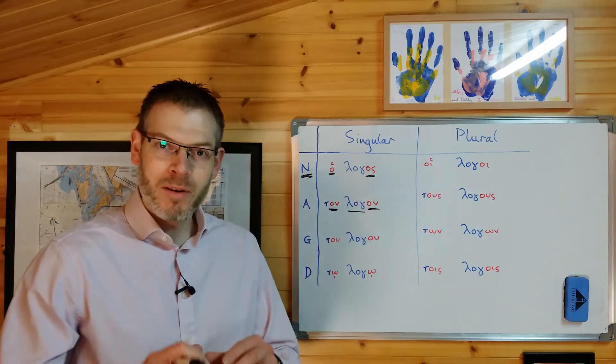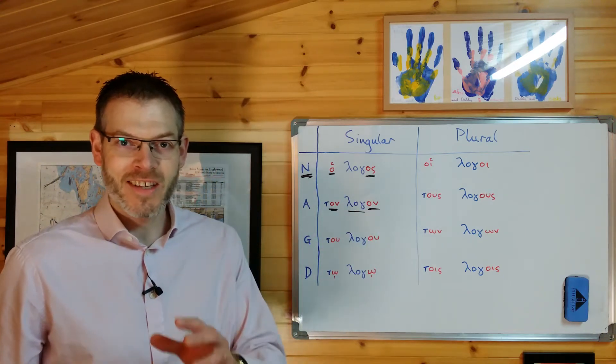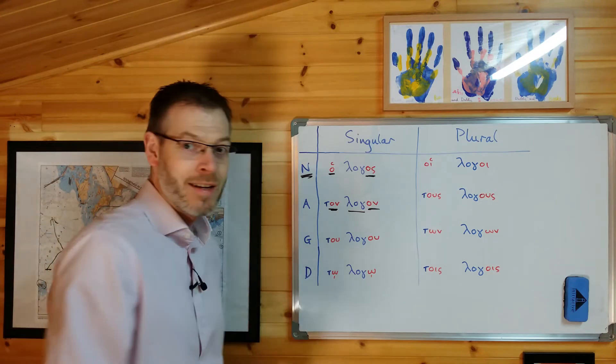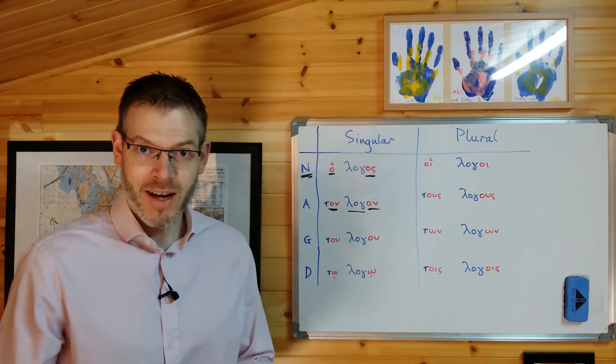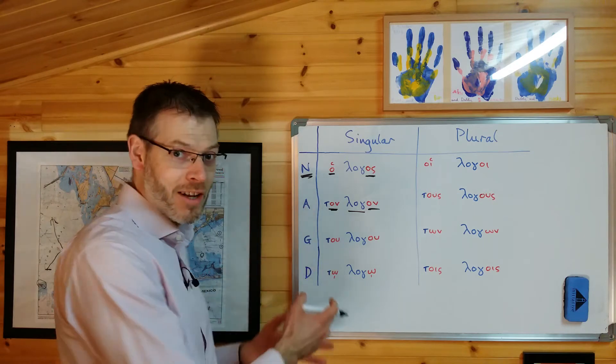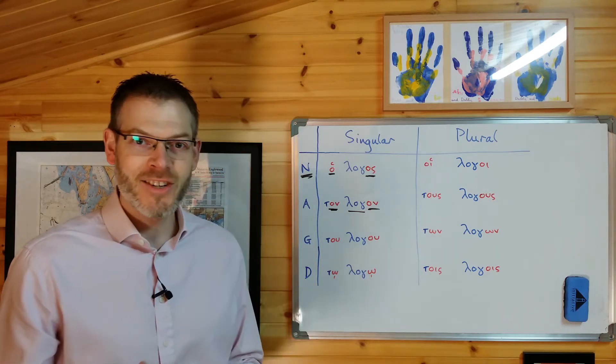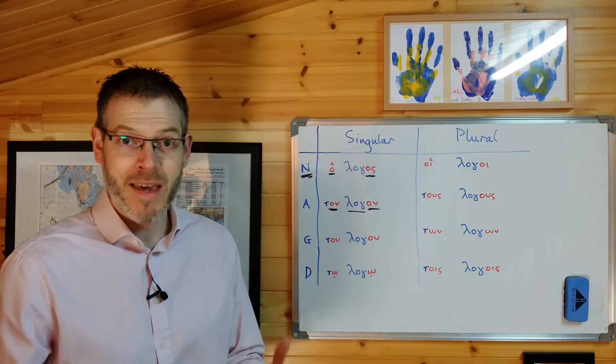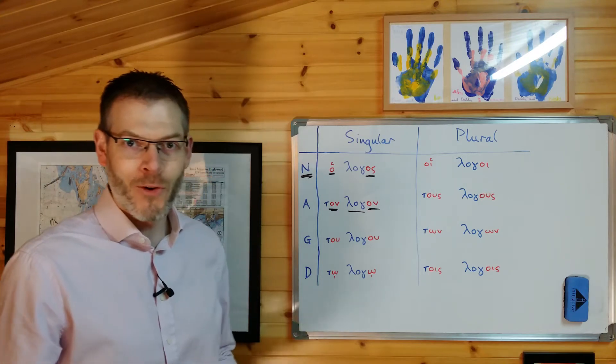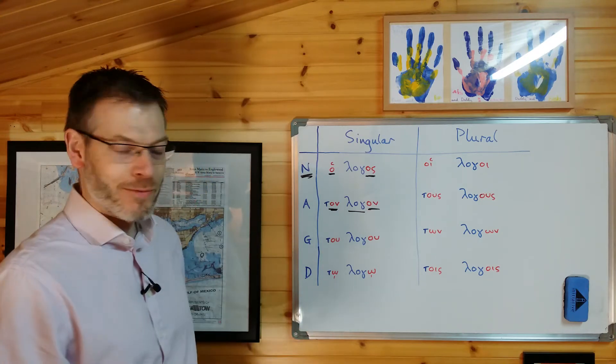Now, the full complement of cases that you need to learn at this stage includes genitive and dative. And there are two tasks, therefore. First, you've just got to learn the form, which you see right here. And second, you've got to understand what they mean.